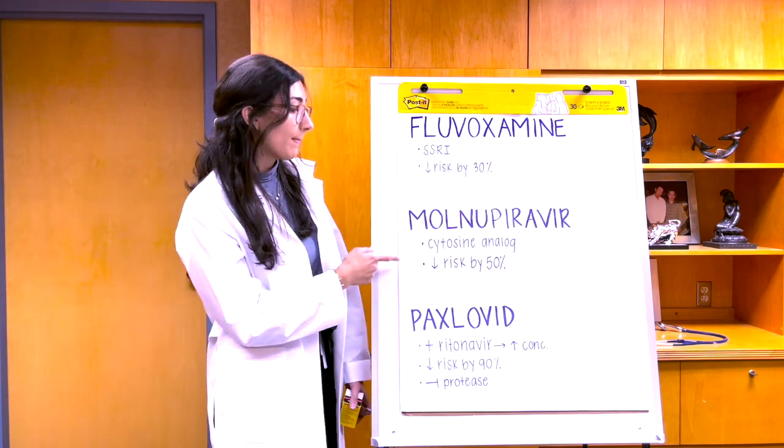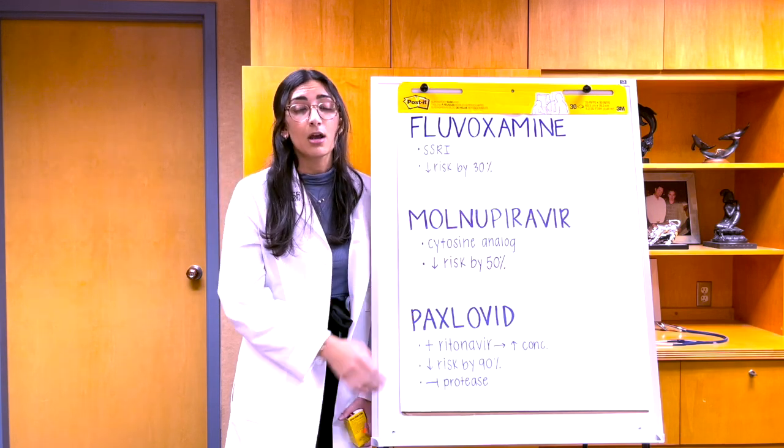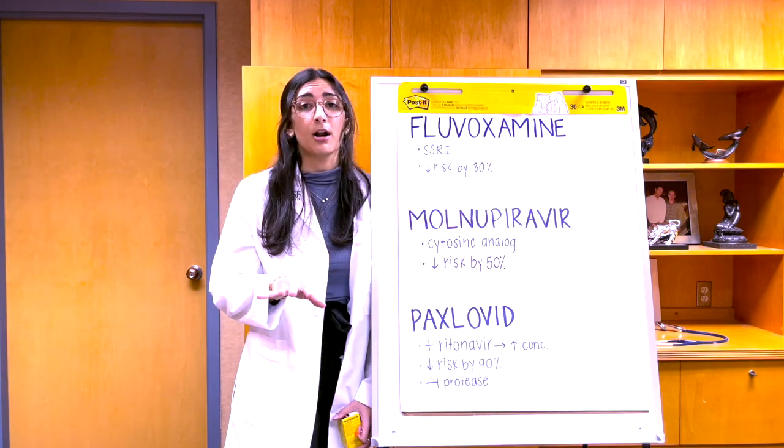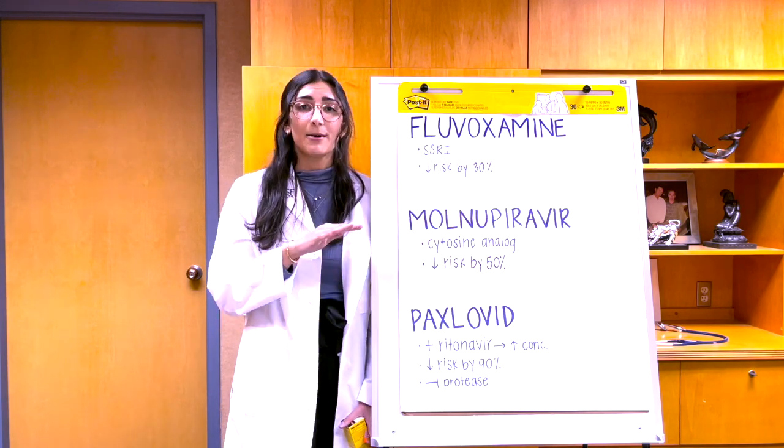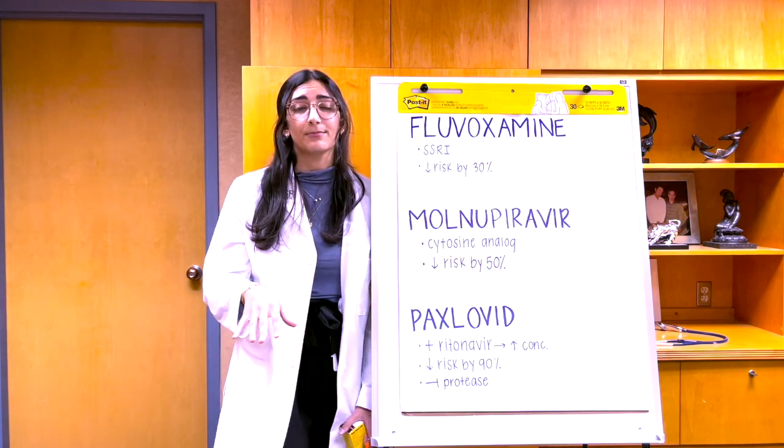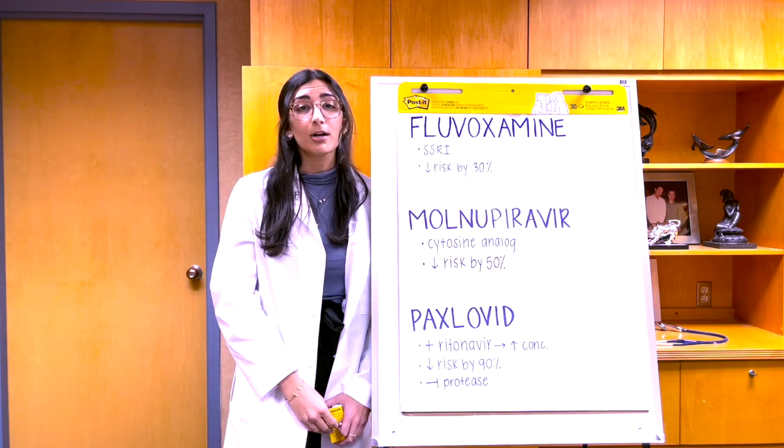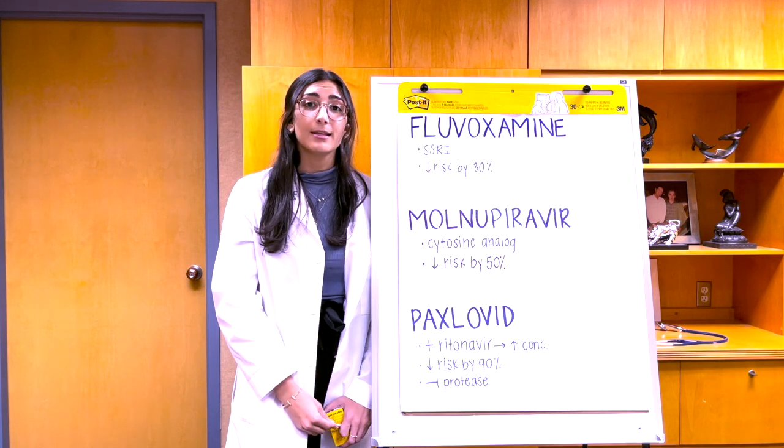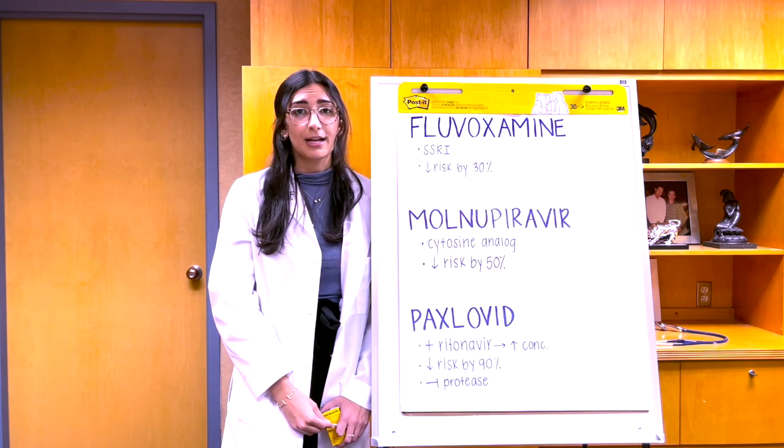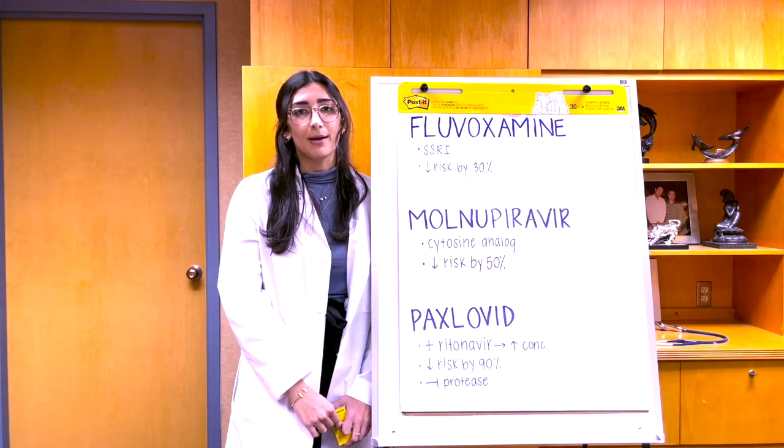Fortunately, Merck and Pfizer, the companies responsible for these two products, are committed to distributing their products globally. Merck's product, molnupiravir, is available to companies around the world at a tier-based pricing system based on each country's ability to pay. Merck also has permitted access to generic manufacturers and the medicines patent pool to produce generic molnupiravir and make it available to middle and low-income countries.